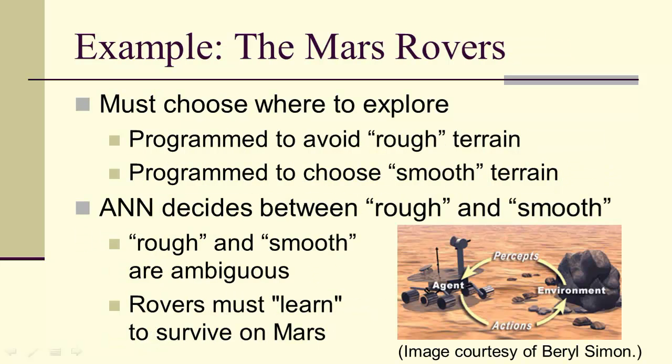For example, the Mars rovers, they actually use neural networks because they have to choose where they're going to explore. They have to be programmed to avoid rough terrain, but to choose smooth terrain. And the neural network has to decide between what's rough and smooth on its own. It's a long ways away. It can't ask for help. So the rovers have to learn, or in some sense be trained, to survive on the planet Mars.